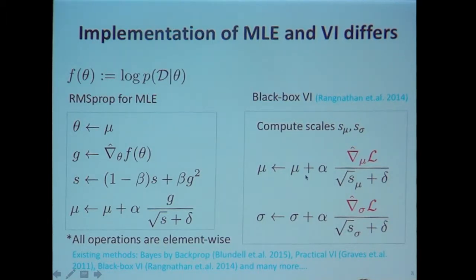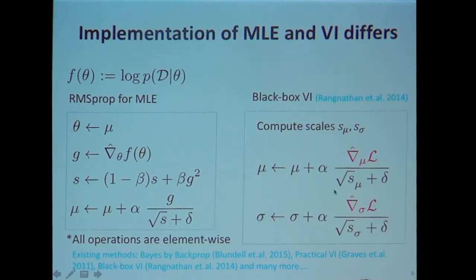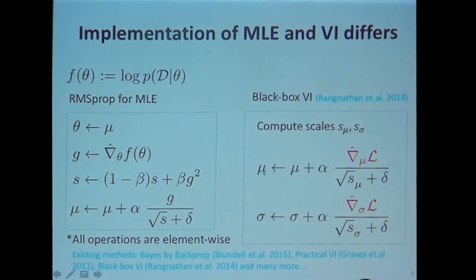A more theoretical problem is that you have scaling vectors for mu and sigma that you have to compute — similar to what RMSProp does with gradient magnitude. What I'm going to show is that if you do natural gradient descent, these scaling vectors are automatically computed, and the code looks almost identical. This method is called black box variational inference, proposed by David Blei's group.